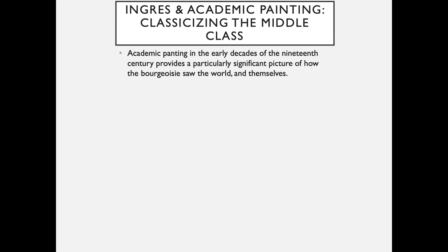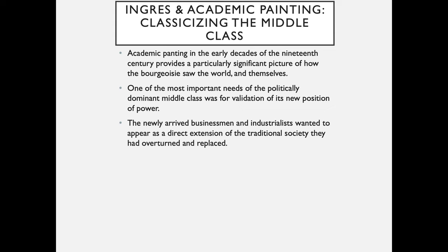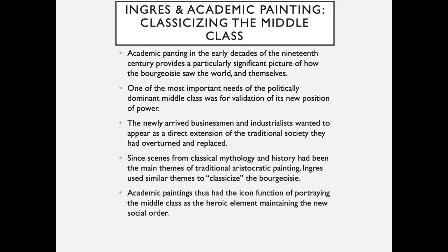Classicizing the middle class. Academic painting in the early decades of the 19th century provides a particularly significant picture of how the bourgeoisie saw the world and themselves. One of the most important needs of the politically dominant middle class was validation of its new position of power. The newly arrived businessmen and industrialists wanted to appear as a direct extension of the traditional society they had overturned. Since scenes from classical mythology and history had been the main themes of traditional aristocratic painting, Ingres used similar themes to classicize the bourgeoisie, portraying the middle class as the heroic element maintaining the new social order.